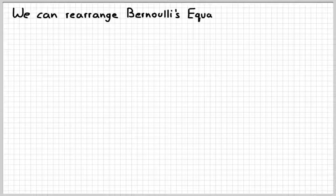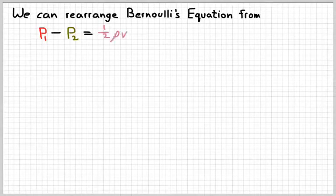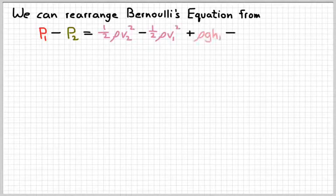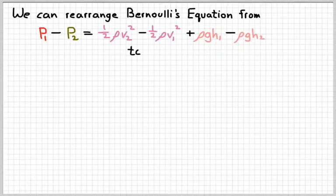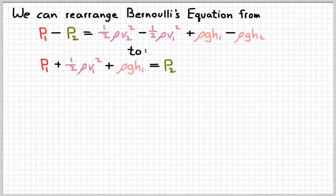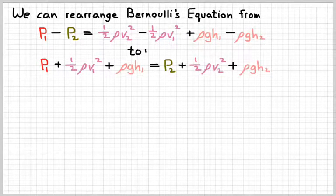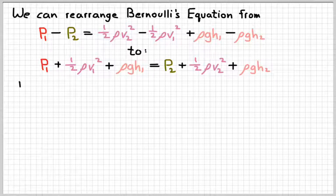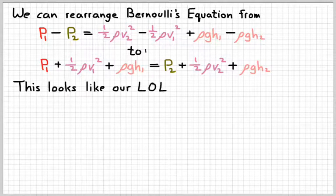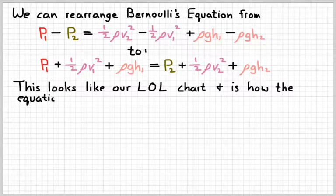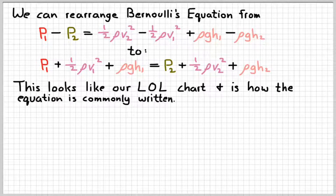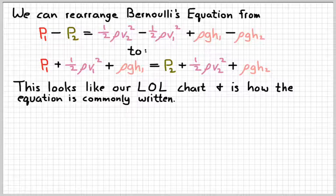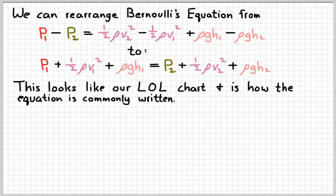So we can take Bernoulli's equation as we've written it, and we can do a little bit of rearranging to make it look more like what we wrote. So here's Bernoulli's equation as we wrote it a minute ago. We can rearrange it, getting everything with a subscript 1 on one side and a subscript 2 on the other to look a little bit more like that. That looks a little bit more like how we laid out our LOL chart. All the energy for point 1 is on the left side of the equation, just like it's on the left side of our LOL chart. And it's also how the equation is really written in everyday life. If you look at your equation chart, Bernoulli's equation is going to look more like that than what we wrote previously.